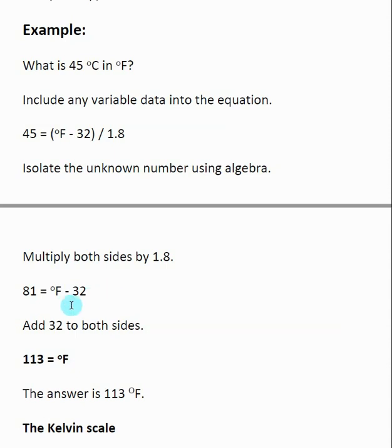Then I want to get rid of the negative 32. How I do that is by adding 32 to both sides. On the left hand side, 81 plus 32 gives us 113, and that's our answer. So 45 degrees Celsius is equal to 113 degrees Fahrenheit.